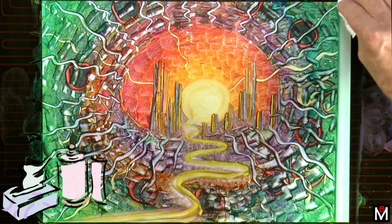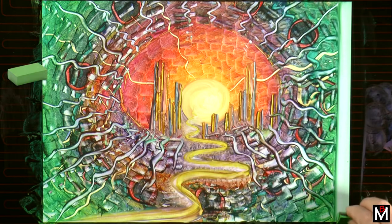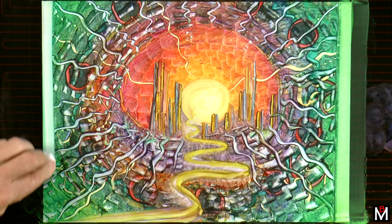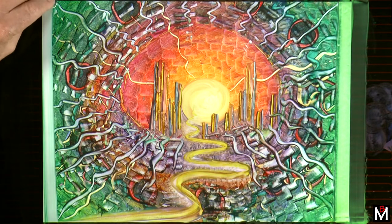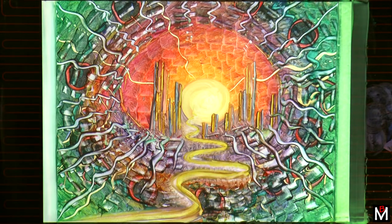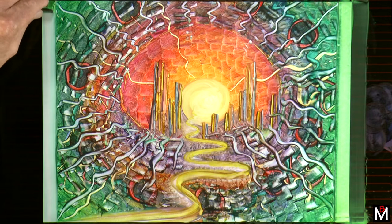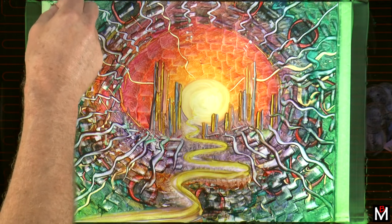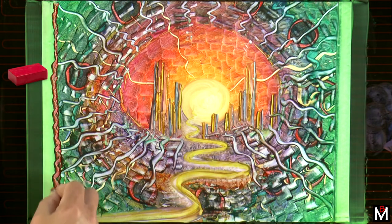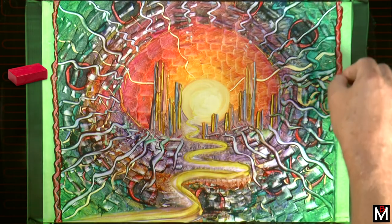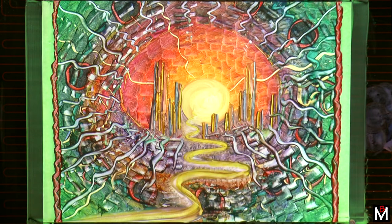I always think a border can be a nice way to help define an ending and containment. If you don't get it straight the first time, you can always go back. A little bit of green on top, and then just to delineate it a little more strongly, some red. Red being the opposite of green. So that was it.